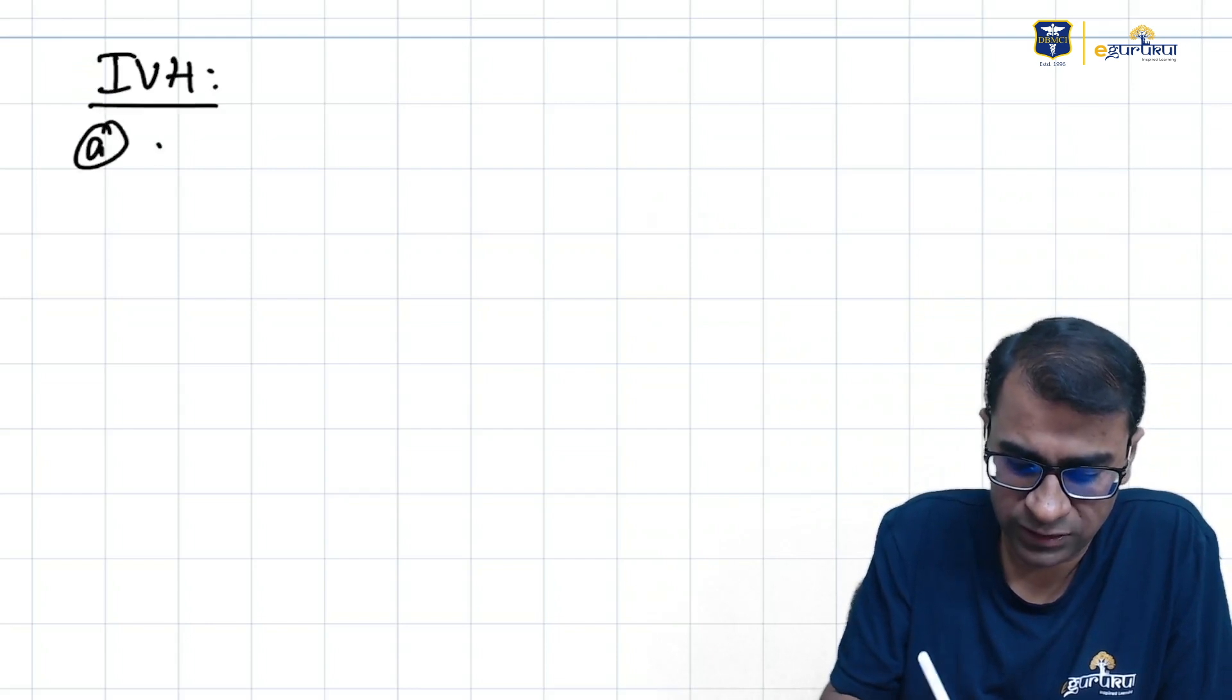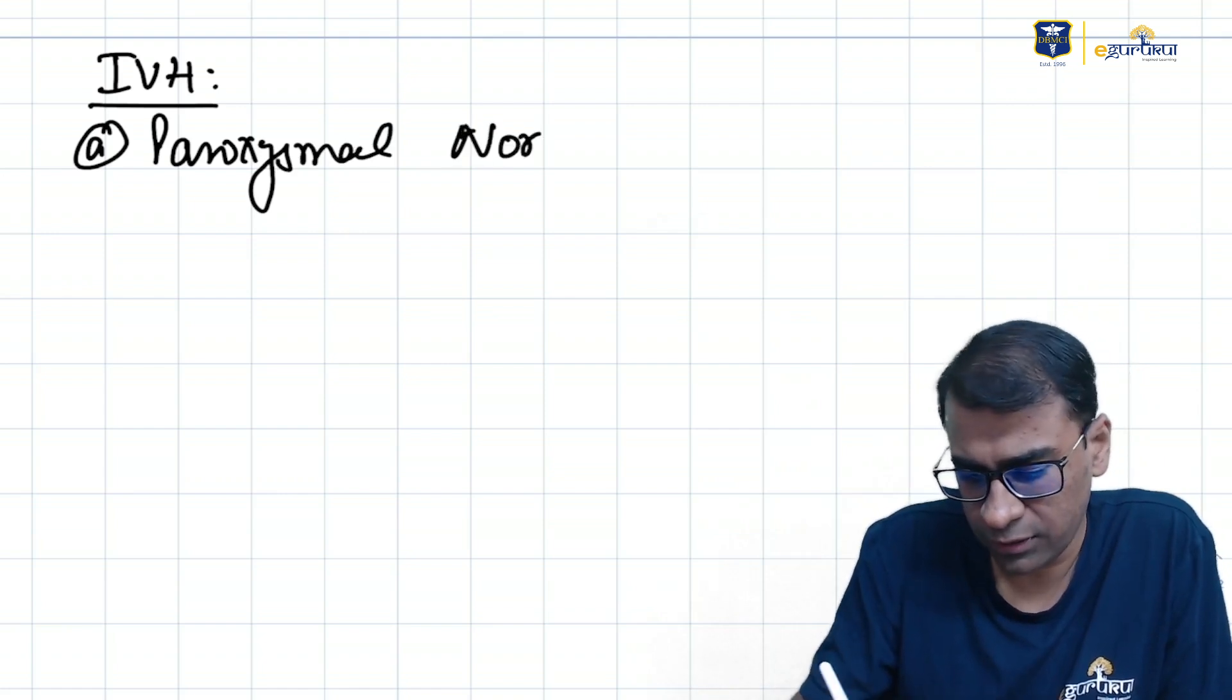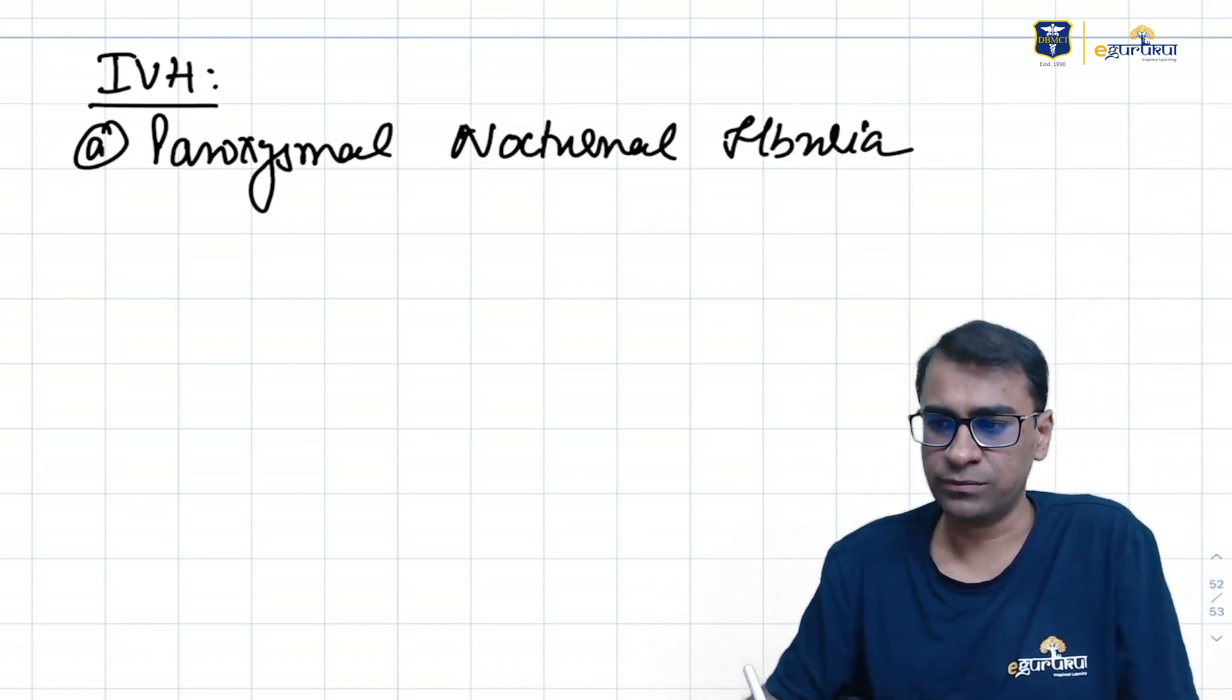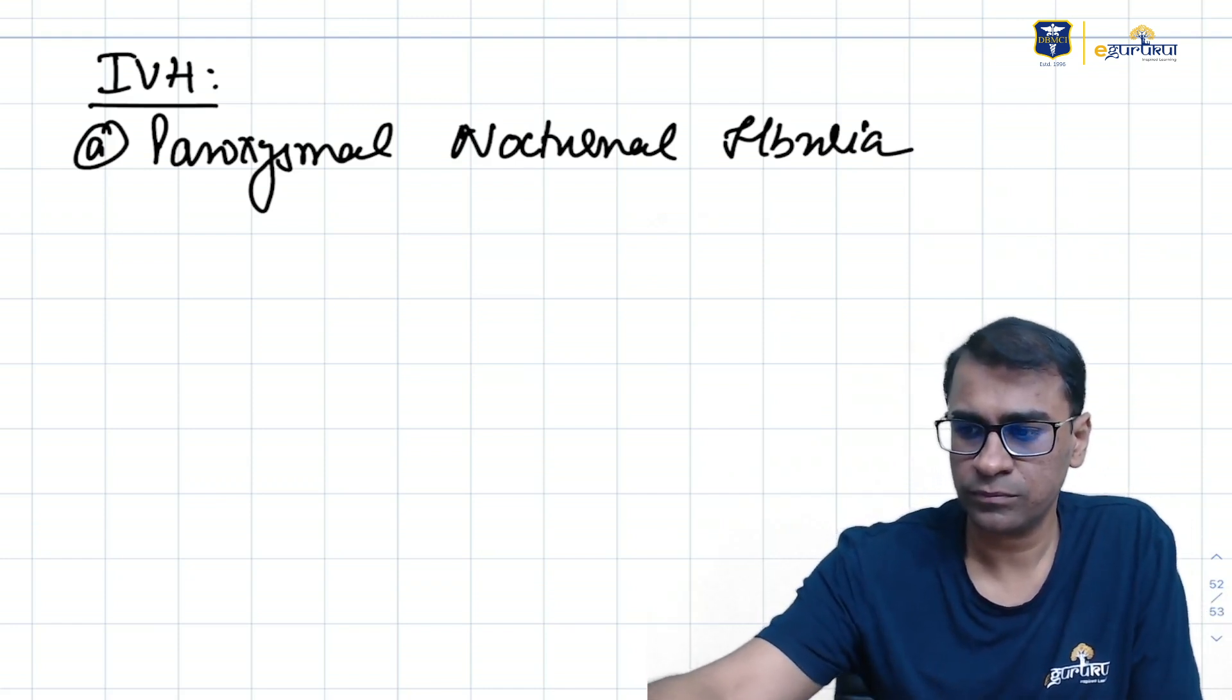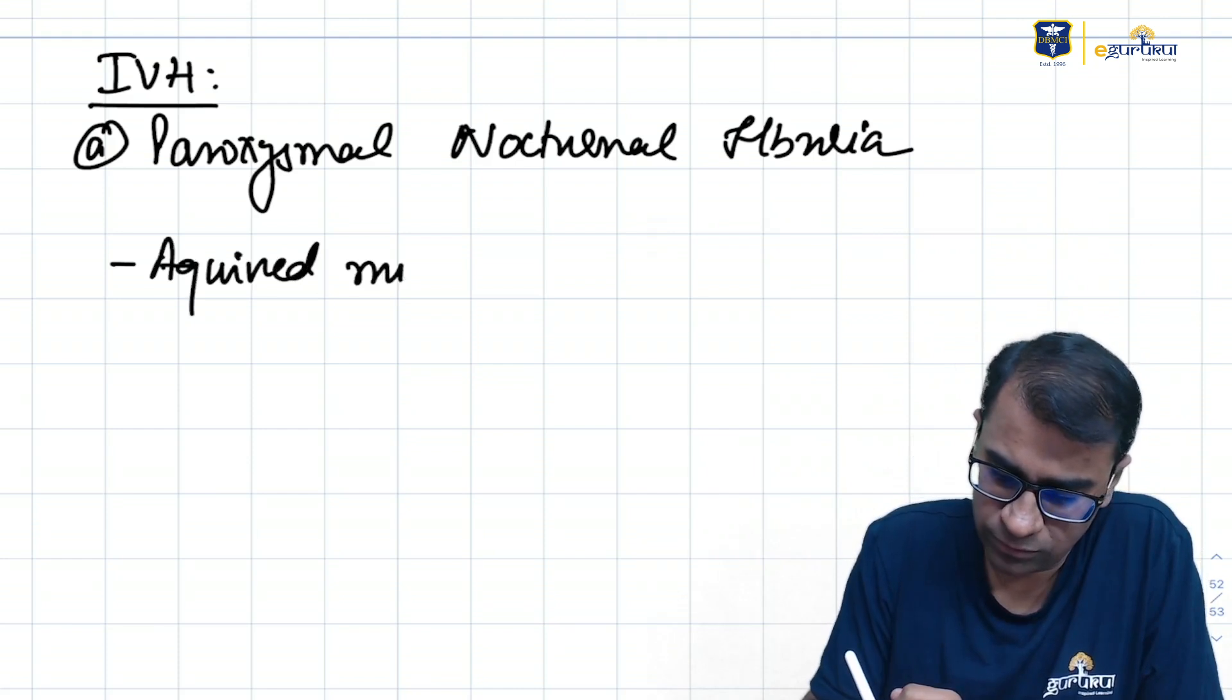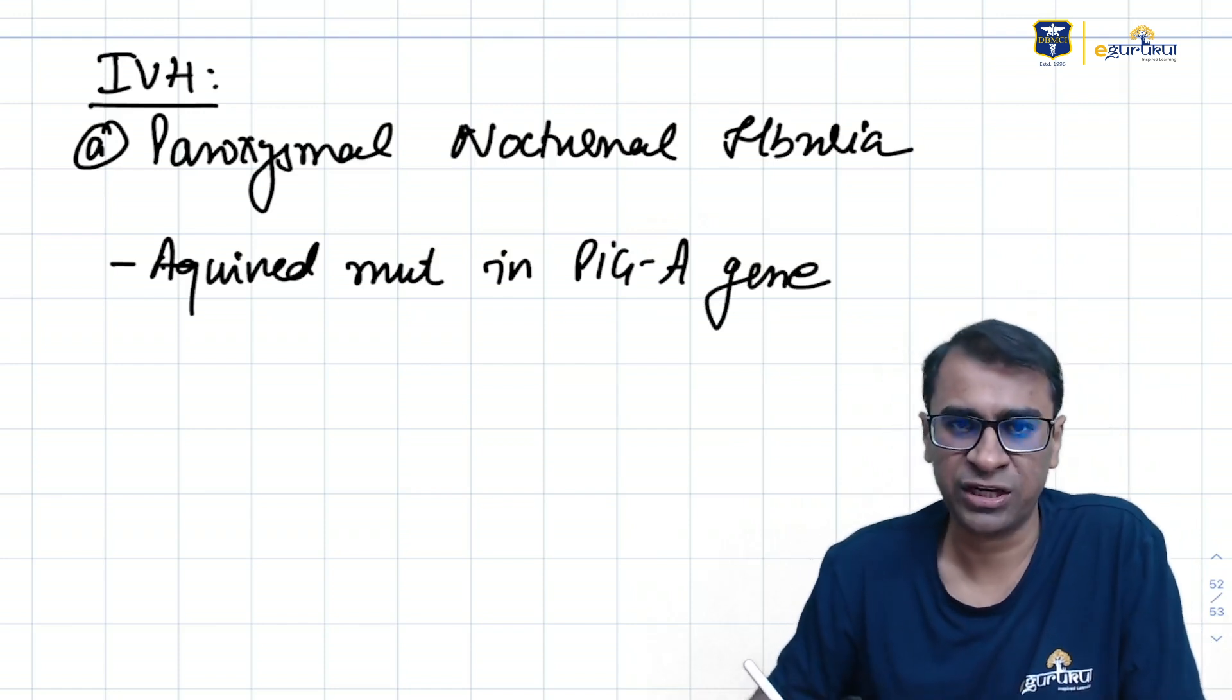Intravascular hemolysis. The first one is PNH, Paroxysmal Nocturnal Hemoglobinuria. This is basically an acquired mutation in the PIG-A gene.